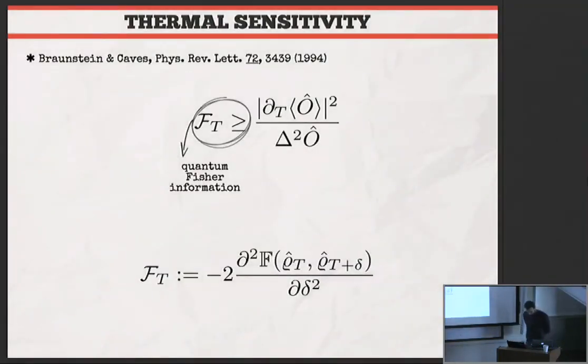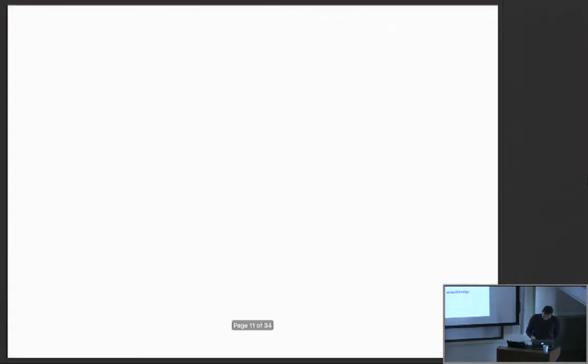I will use thermal sensitivity to refer to this figure of merit for thermometry. If you want a more formal understanding of Fisher information, you have the reduced state of the probe when the sample is at temperature T, and you change a little bit the temperature. If you see that the fidelity between the two states, when temperature changes a little bit, drops a lot, then it means your probe is a good temperature sensor because it immediately detects any little change in temperature. This Fisher information is quantifying this notion that the state is sensitive in terms of change.